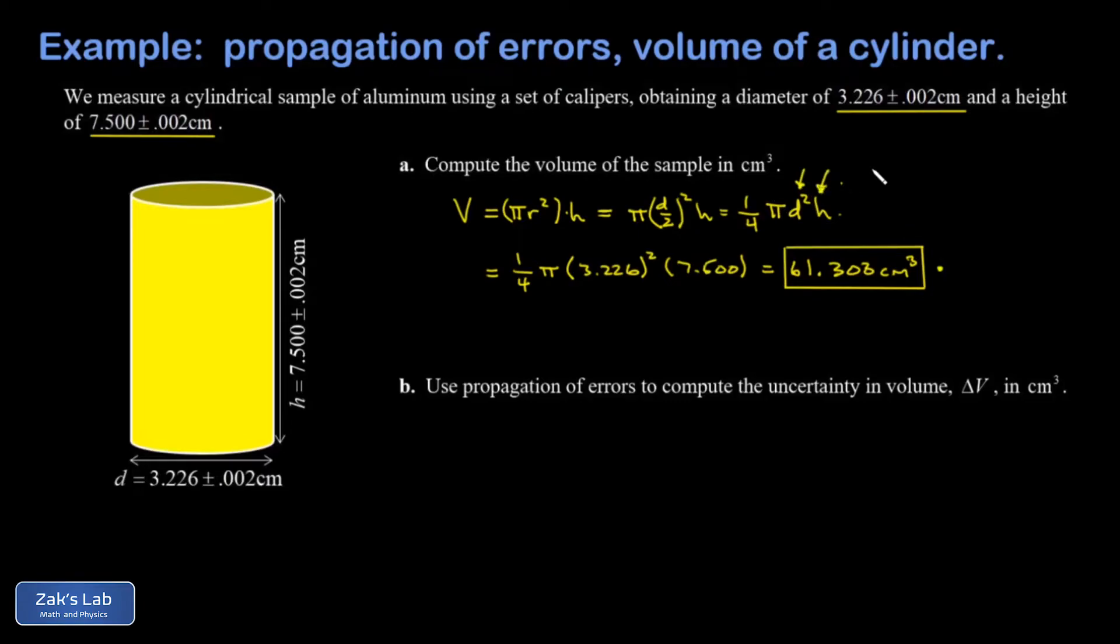So the propagation of errors formula that we're going to use looks like this: the relative uncertainty in V, in other words delta V over V, is the square root of 2 times delta d over d (and the 2 is there because it was squared in the volume formula), plus delta h over h squared inside that square root.